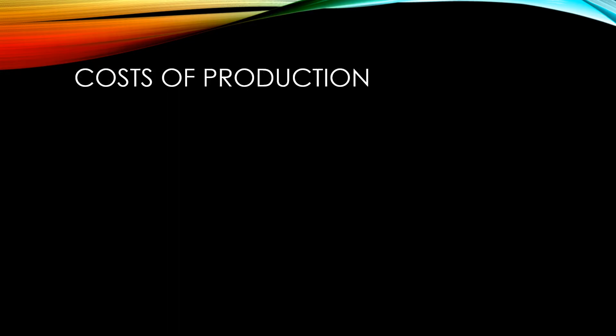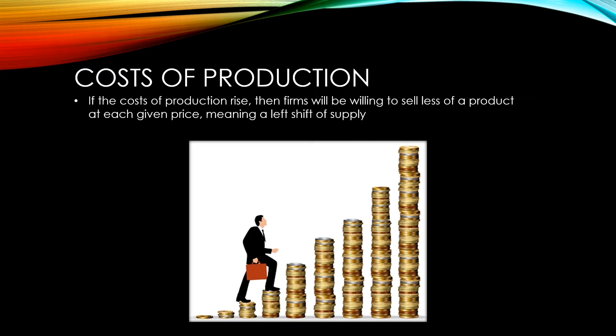If the costs of production rise, then firms will be willing to sell less of a product at each given price, meaning a left shift of supply. This may be because wages have increased, or perhaps because the inputs to the production process have become more expensive. A petrol producer, for instance, would see a left shift of supply if the price of crude oil were to go up, because it's a major component in producing petrol. If production costs go down, perhaps because producers find better suppliers for the inputs to their production, then supply will shift to the right.